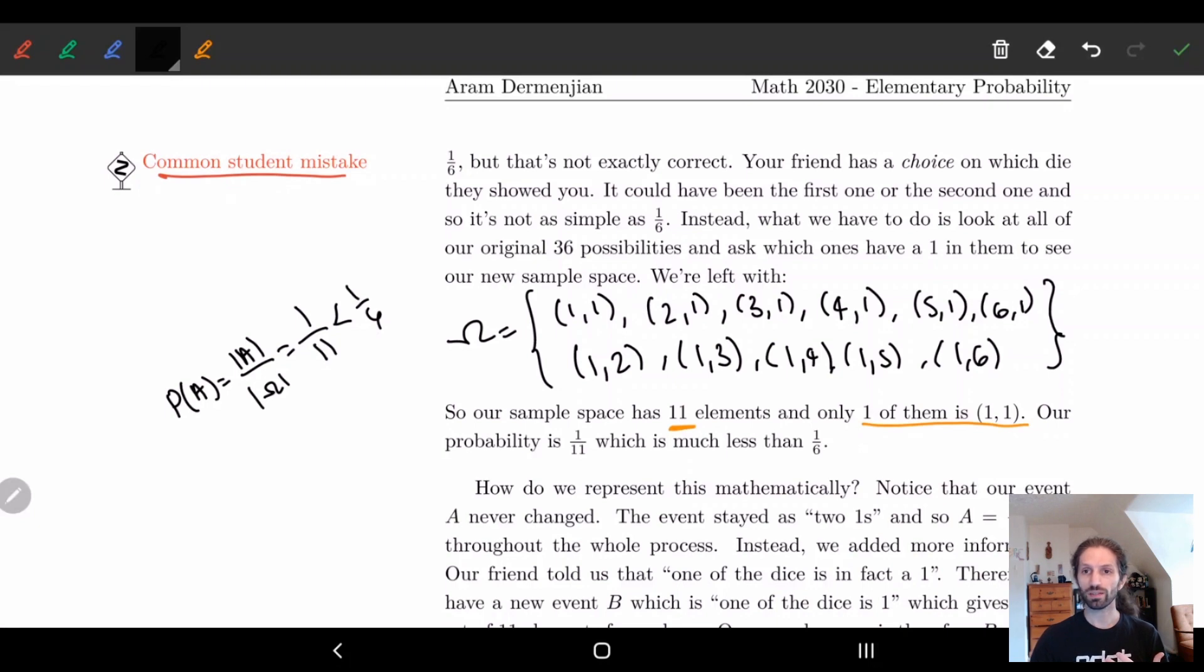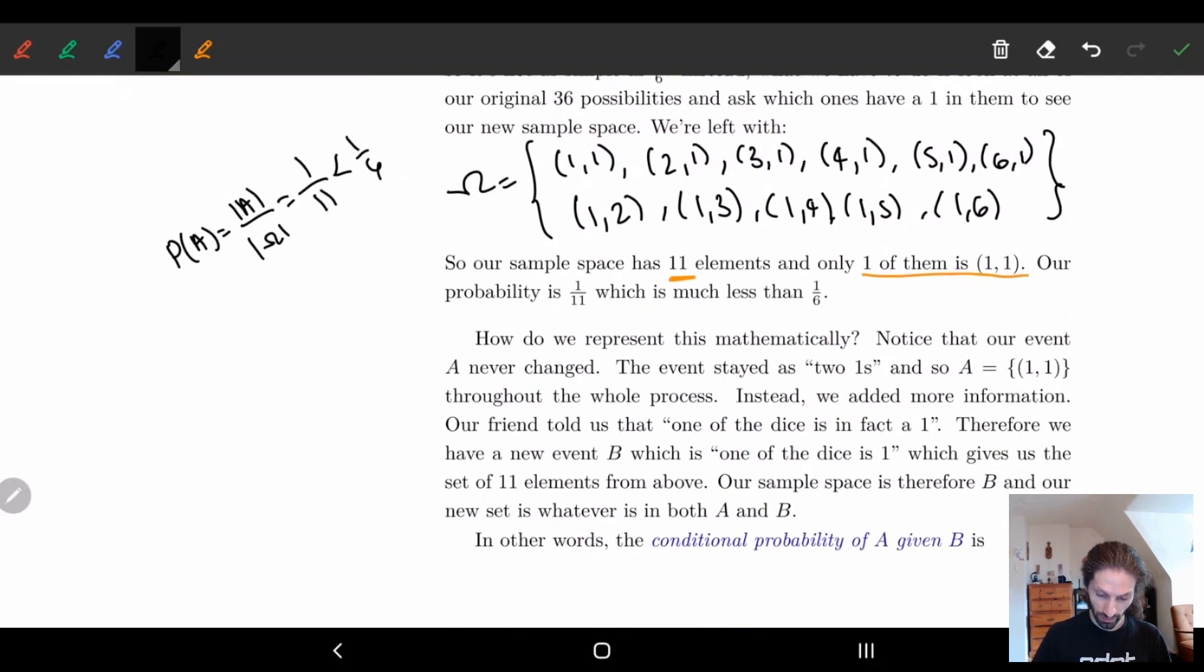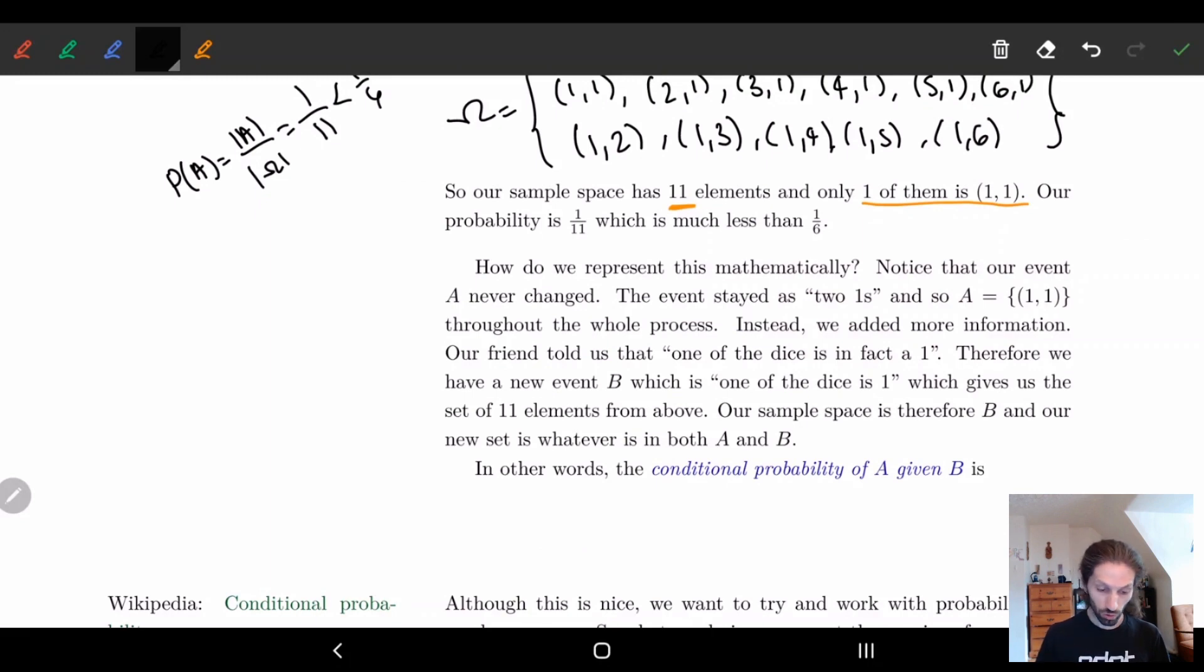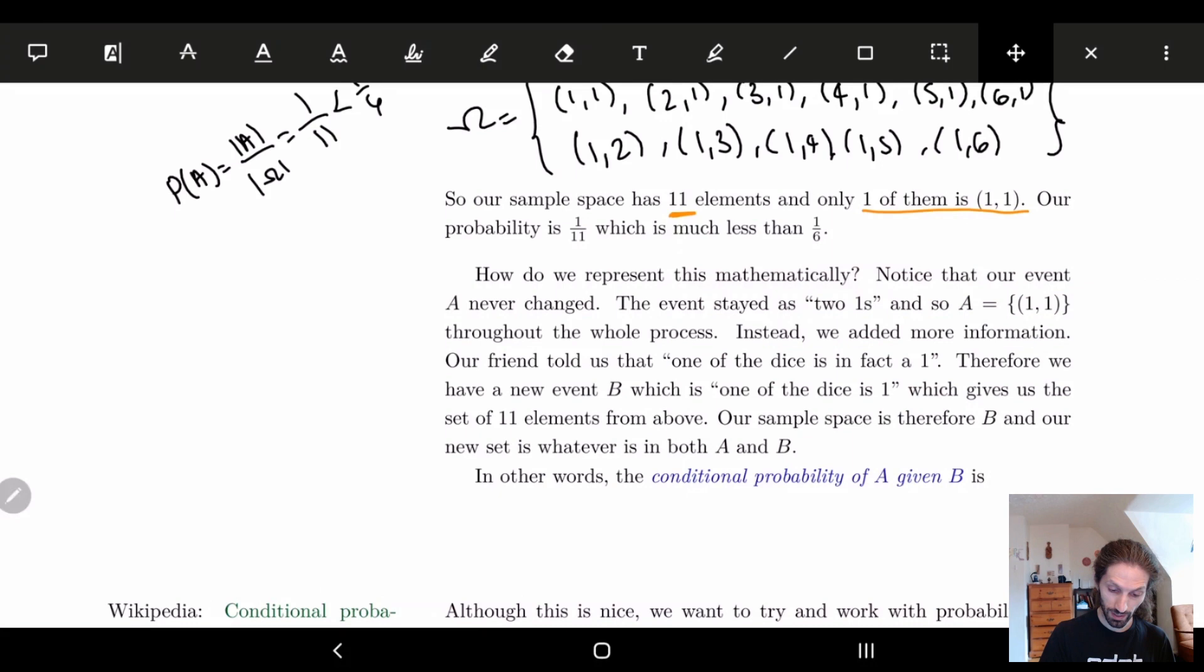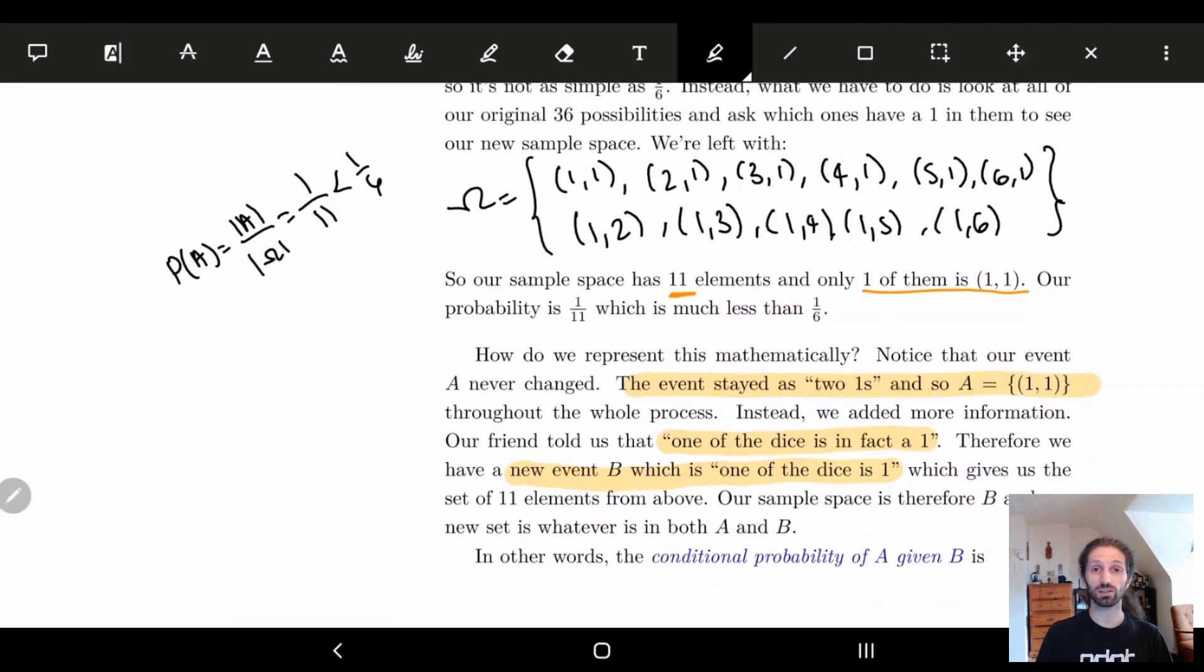And so basically what we have here is what's called conditional probability. And so the question becomes how do we represent this mathematically. So notice that our event A never changed. So A was always the same. The event stayed as two ones. So A is always equal to (1,1). What changed is our sample space. And basically the sample space became the event one of the dice is in fact the one. So we can actually define a new event B which is that one of the dice is one. This is kind of exactly what we did in order to calculate the sample space from above.